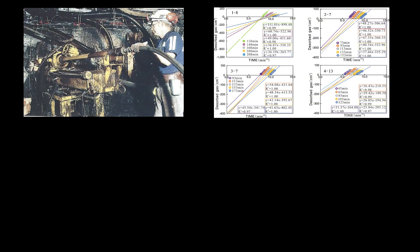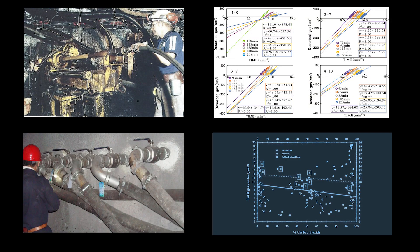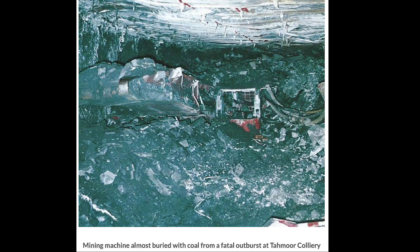Coal seam drilling, gas sampling and analysis, gas drainage, and outburst threshold limits for outburst prediction and prevention were not effectively and reliably established until the mid-1990s, following three separate fatal outbursts in the Bull Eye Seam in New South Wales near Wollongong.